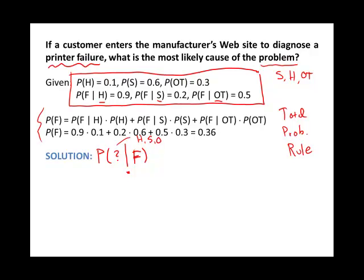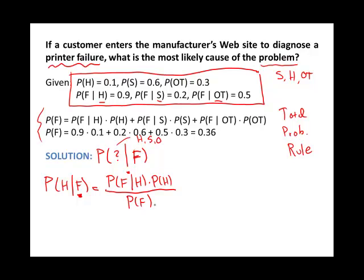Those are the three I want to find. I'll write out the first two completely. I'm trying to find the probability of a hardware problem given a printer failure, P(H|F). By definition of Bayes' theorem, this is P(F|H) × P(H) divided by P(F). So we're restricting our sample space to failure. The probability of failure is broken up into three causes — failure in hardware, failure in software, and failure in other. All I'm doing is taking the ratio of how that failure could be associated with hardware over the total probability of failure.